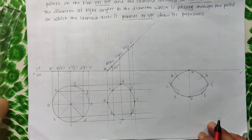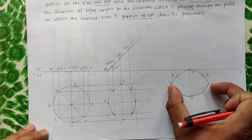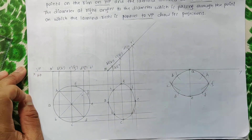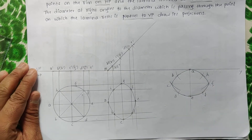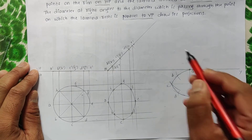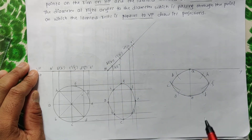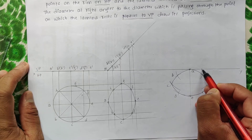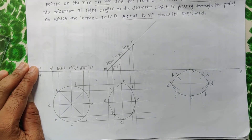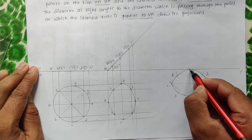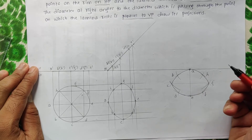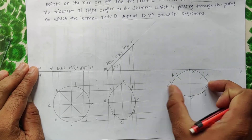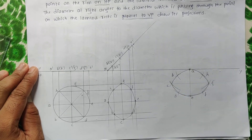You can observe that GC is parallel to VP or the XY line. One more point: the problem says parallel to VP, which means point A can be on the XY line or just below it — there is no rule that A must touch XY. Even A can be well below the XY line, but the condition is that CG must be parallel to the XY line.